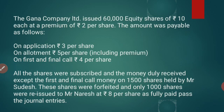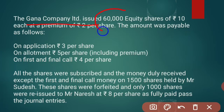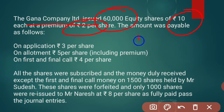Ghana Company Limited issued 60,000 equity shares. The face value of a share is 10 rupees, and it is issued at a premium of 2 rupees. So the total value of a share is 12 rupees — face value is 10, and since they issued at a premium of 2 more rupees, the total value of a share is 12 rupees.